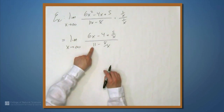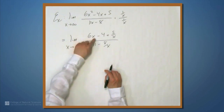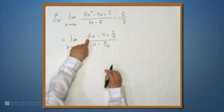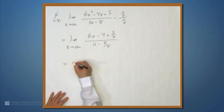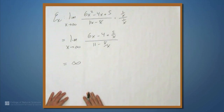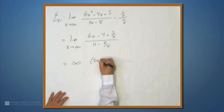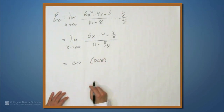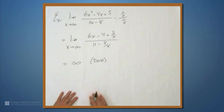Now the roles are reversed. The thing in the denominator is going to a constant, namely 11, and the thing in the numerator is going to infinity. So this limit is equal to infinity. That means the limit doesn't really exist, but this is a special kind of does not exist, and we usually say that this limit is equal to infinity. So those are some examples of computing limits at infinity.